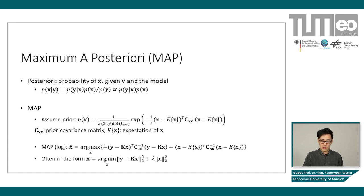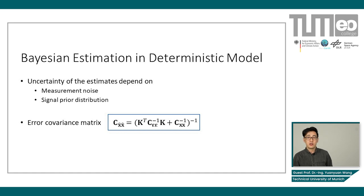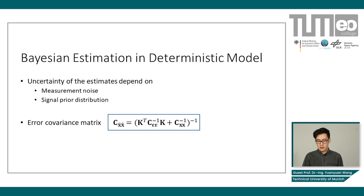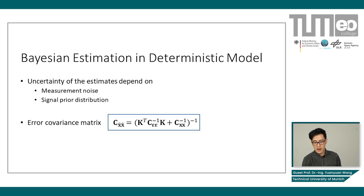After some rearrangement of this formula and with some assumptions, you end up with the formula at the bottom, which is what you usually see in the literature, with lambda being the so-called regularization parameter. This is often known as Tikhonov regularization or L2-norm regularization. Of course, it is not the only maximum a posteriori estimator — the MAP depends on your assumptions about the likelihood as well as the prior. Bayesian estimation in the deterministic model depends on the measurement noise as well as on the prior distribution. With the Gaussian distribution assumption, it is straightforward to derive that the error covariance matrix of the estimates can be expressed in a specific formula, which intuitively means the measurement noise is propagated through the model and then combined with the covariance of the prior.